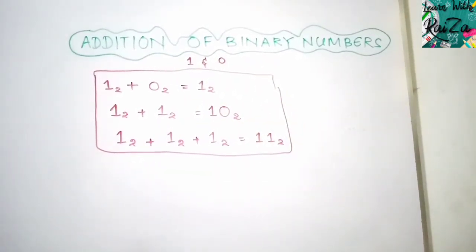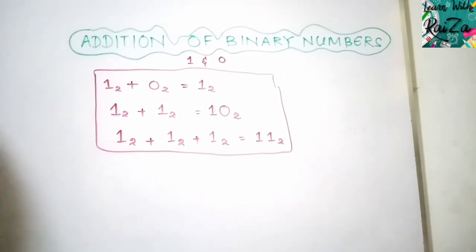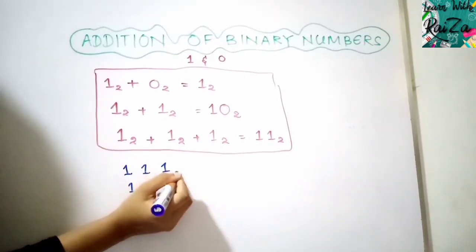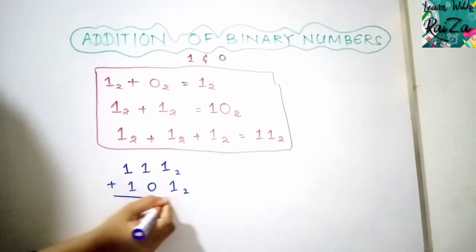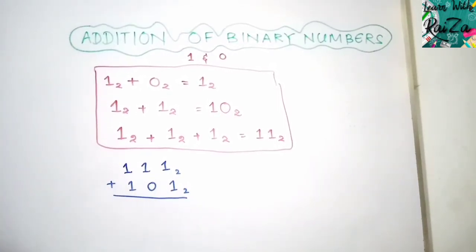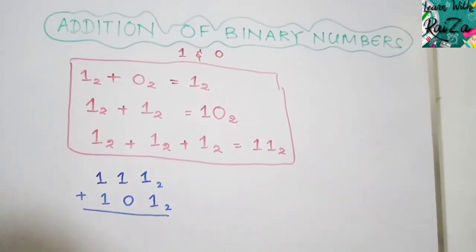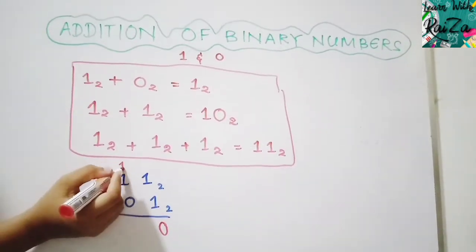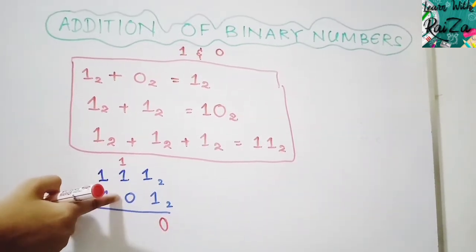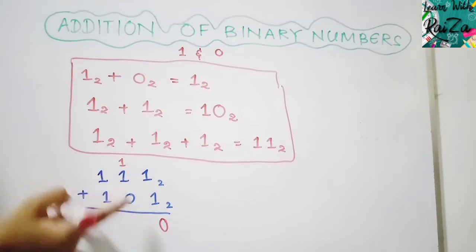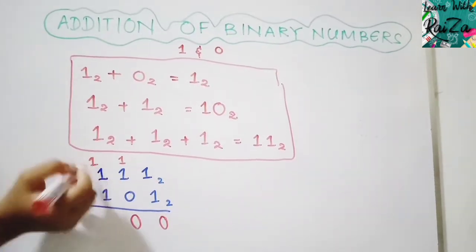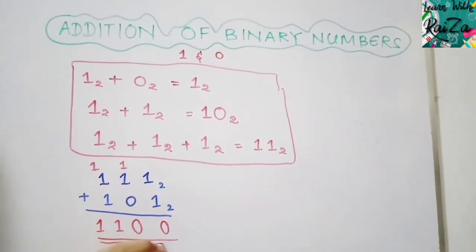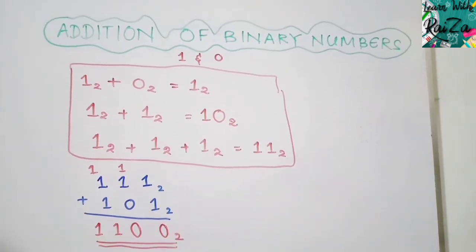Let's apply these rules with an example. Adding 111101 (base 2) and another binary number: starting from the right, 1+1 = 10, write 0 carry 1. Next column: 1+1+0 (carry) = 10, write 0 carry 1. Three 1s gives 11, write 1 carry 1. Continuing this process, the final binary answer is 111100 to the base 2.